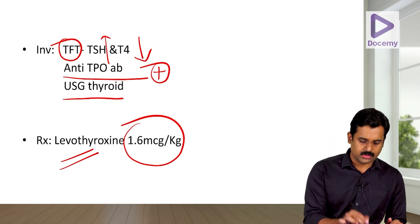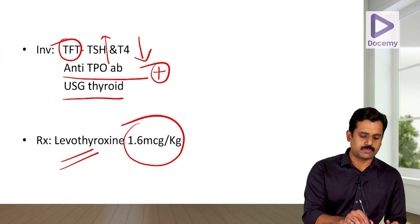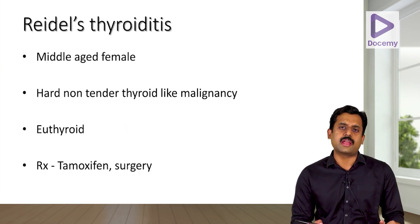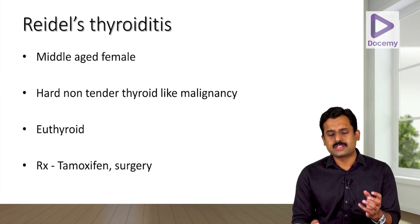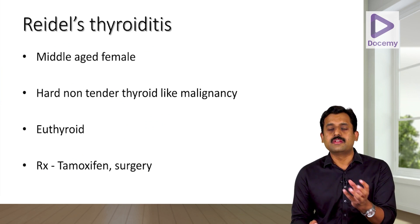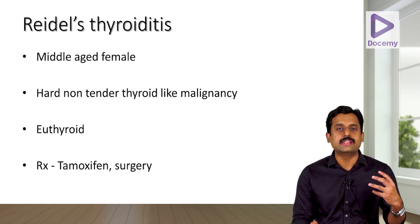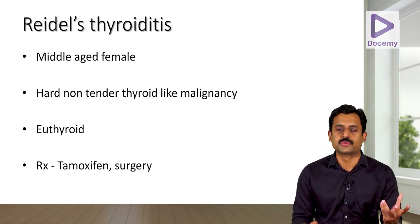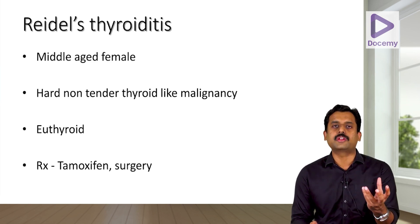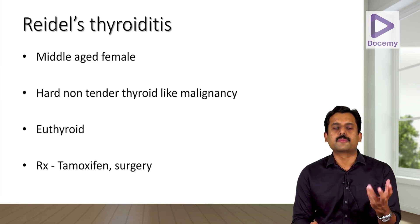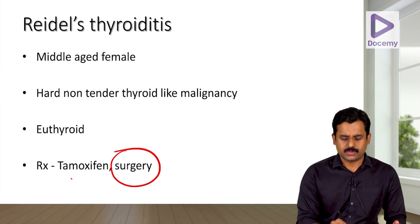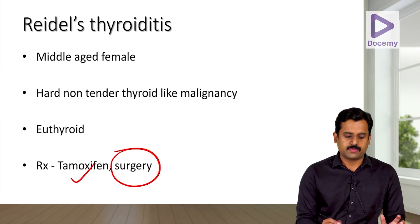Riedel's thyroiditis occurs in middle-aged females and presents as a hard, non-tender thyroid swelling mimicking malignancy, but the patient is clinically euthyroid. Because it is a hard non-tender swelling, it can produce obstructive symptoms. Treatment is surgery, or tamoxifen can be tried.